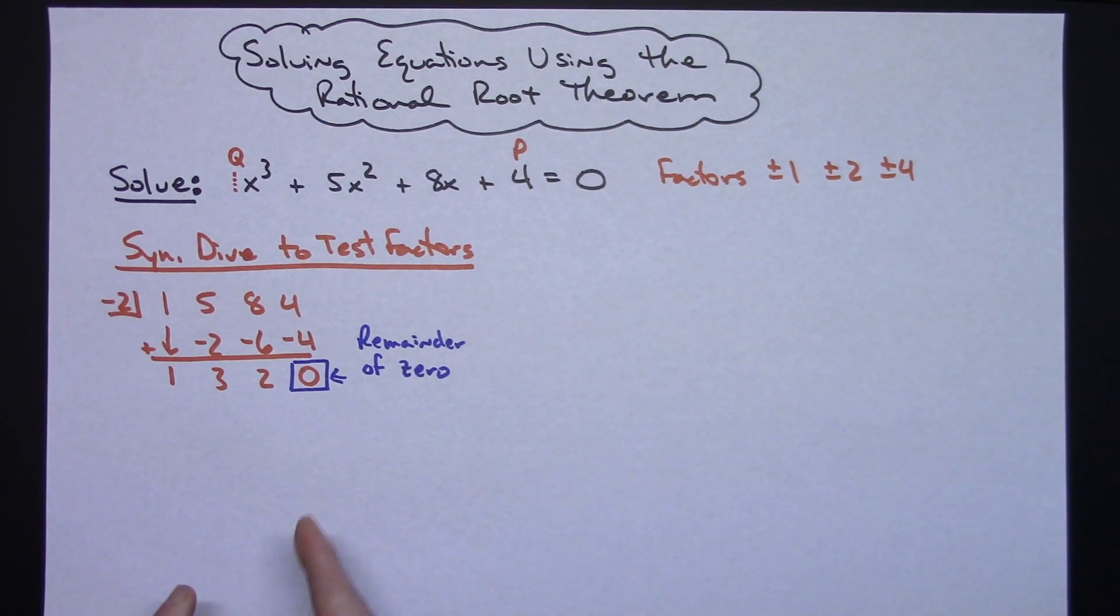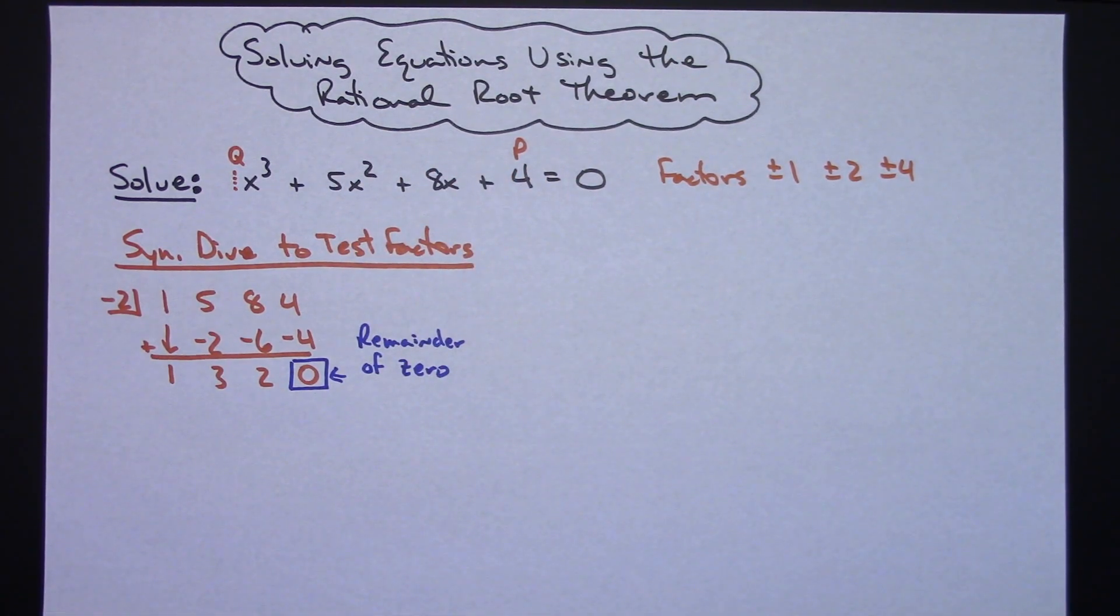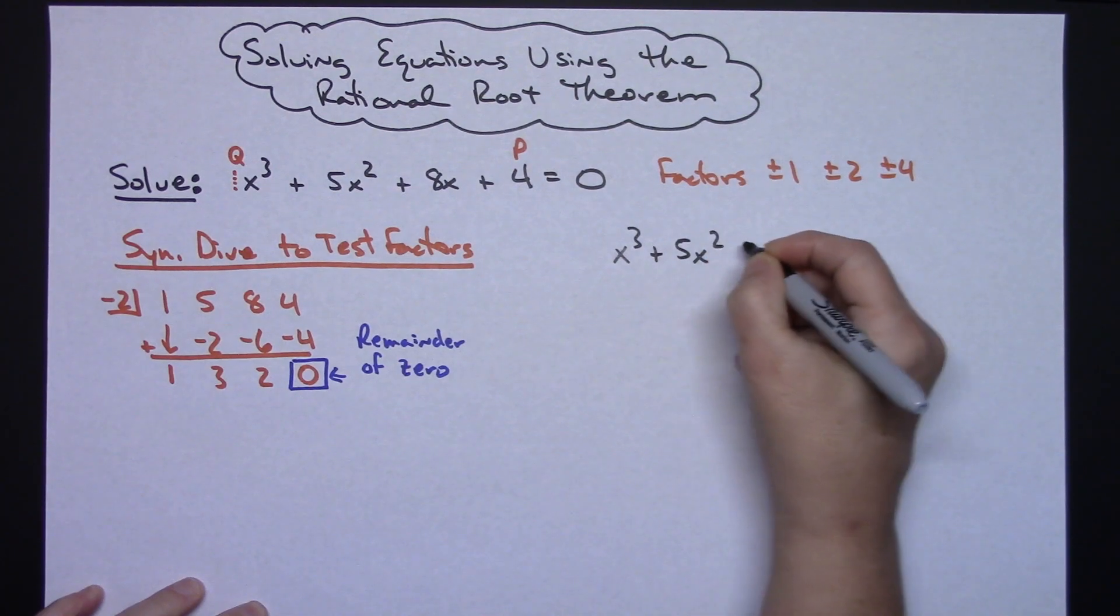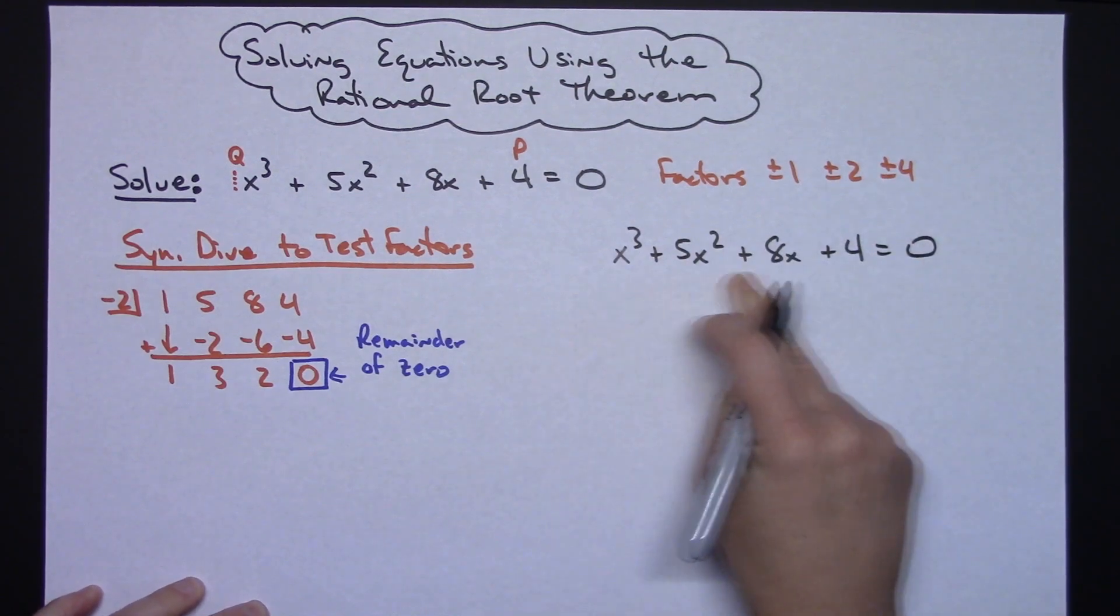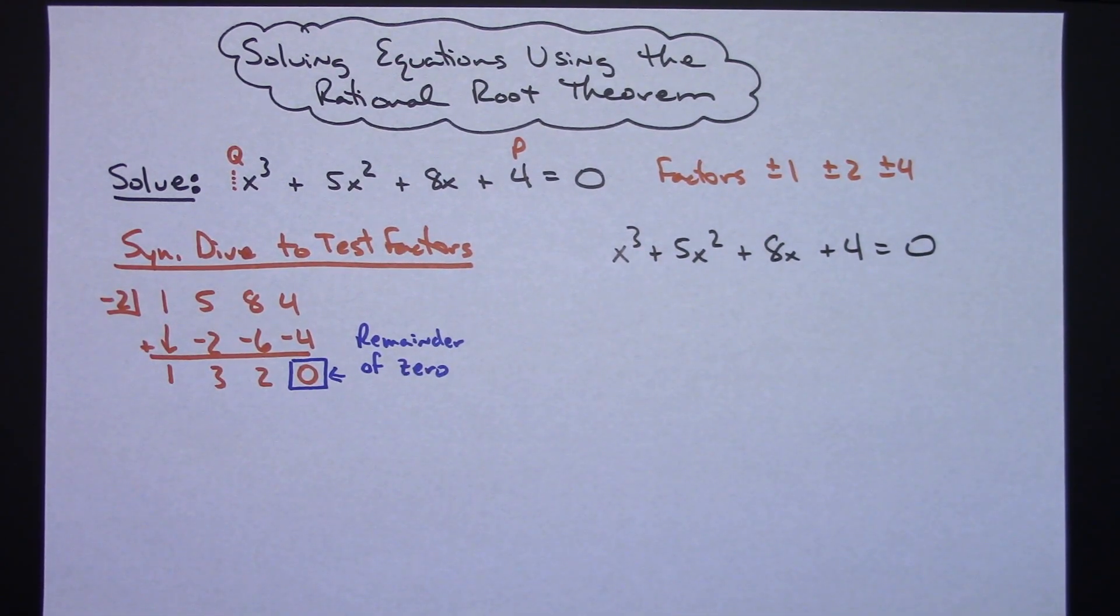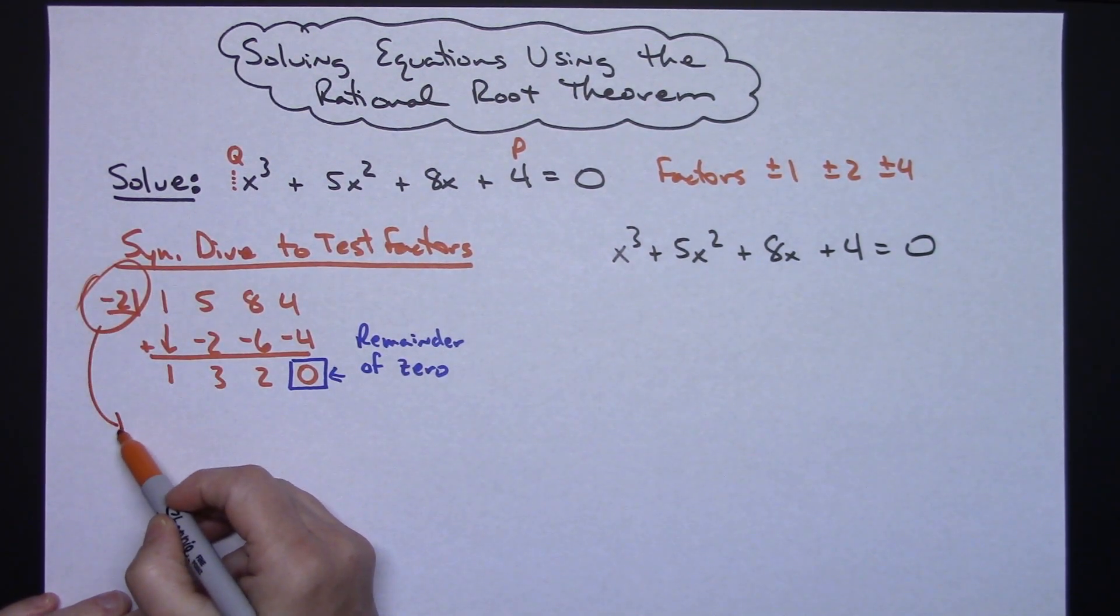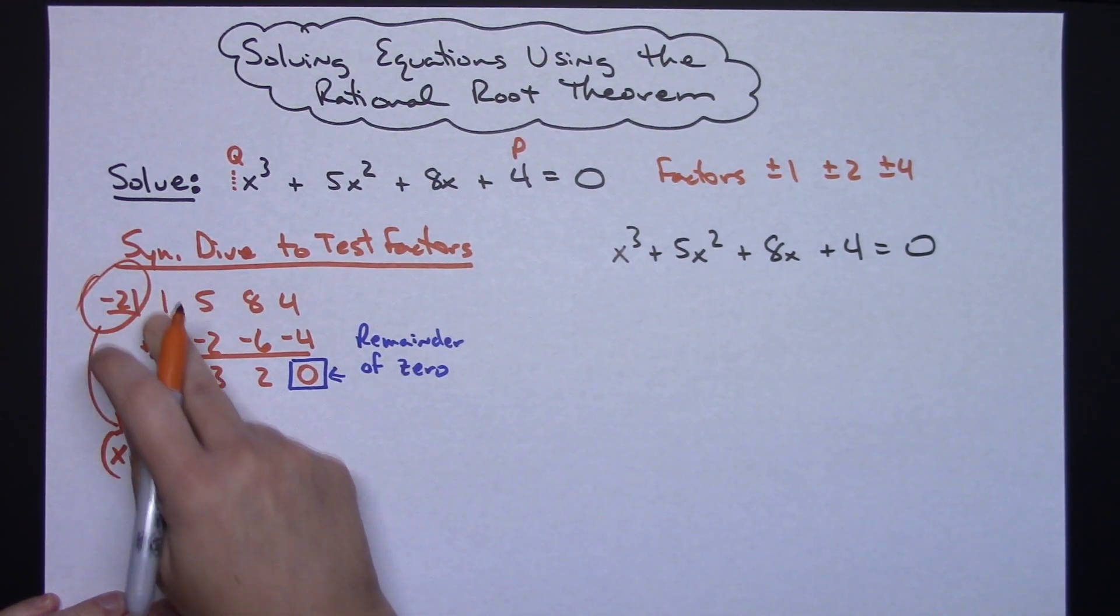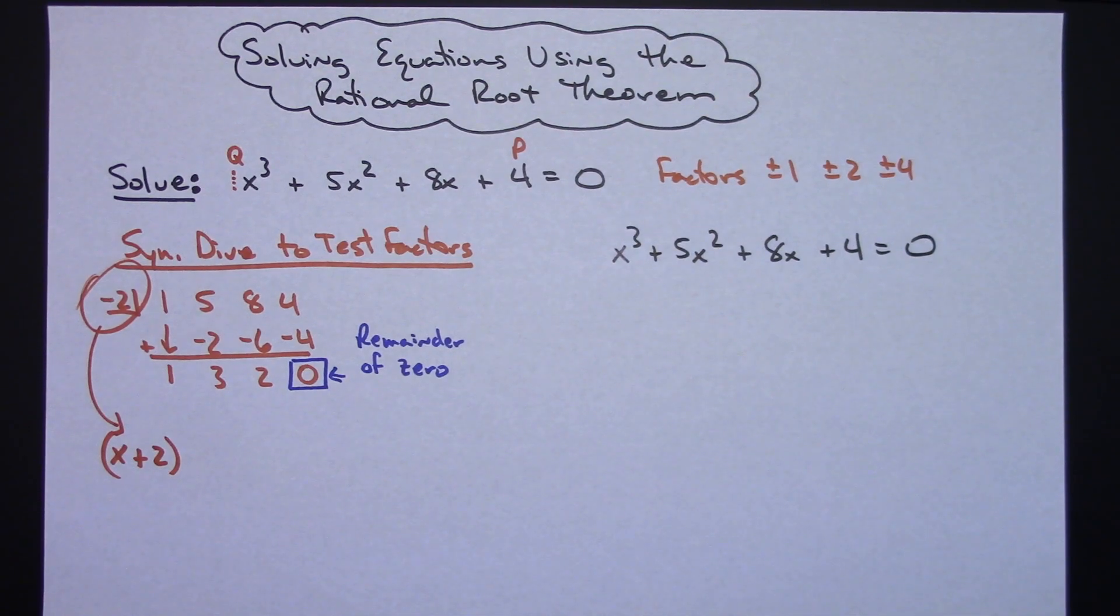Now from this, this is going to help us factor that original equation. So let's do the original equation here. x to the third plus 5x squared plus 8x plus 4 equals 0. Now this is going to help us factor this. What this tells us right here is that x plus 2 is a factor. So x plus 2 has to be a factor because I've got a remainder of 0. So I know one of the factors here is x plus 2.